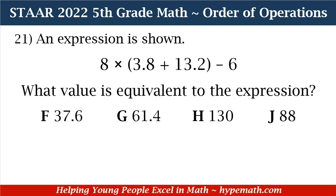Let's look at our first problem. Problem 21 says: an expression is shown — 8 times, in parentheses, 3.8 plus 13.2, closed parentheses, minus 6. What value is equivalent to the expression? Is it F: 37.6, G: 61.4, H: 130, or J: 88?